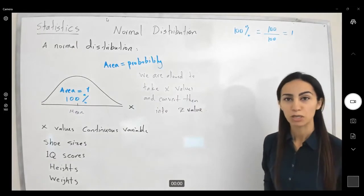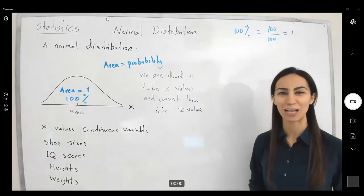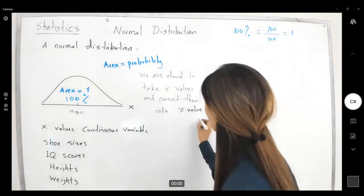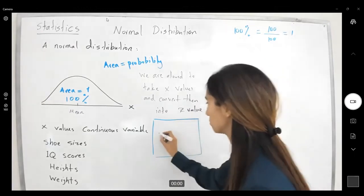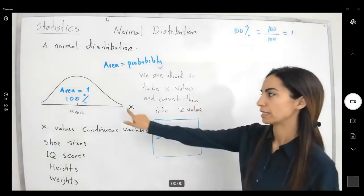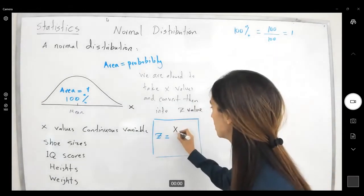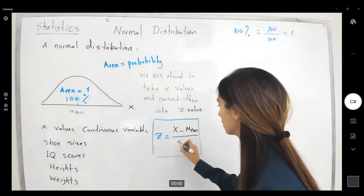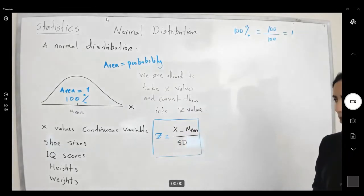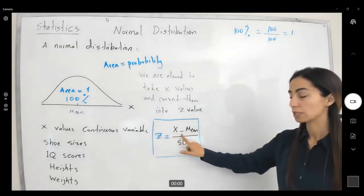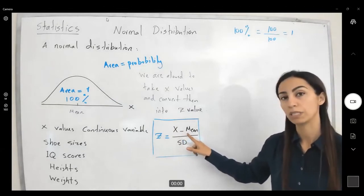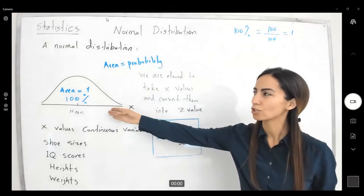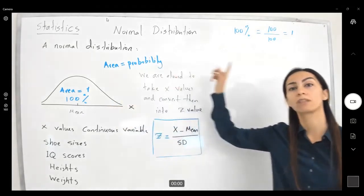We're going to use a formula like a machine to convert x values into new data we call z. The formula is: z equals x minus the mean divided by the standard deviation. So I take each x value, find the difference between x and the mean in the numerator, and divide by the standard deviation in the denominator. This converts the normal distribution into a standard normal distribution.